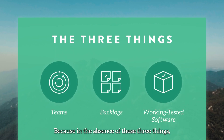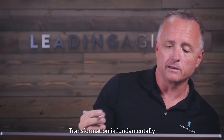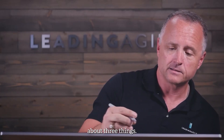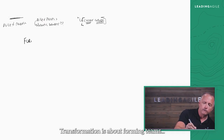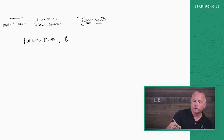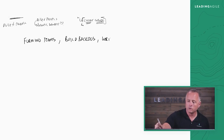Because in the absence of these three things, nothing else in Agile works. Transformation is fundamentally about three things: forming teams, building backlogs, and having the ability to produce working tested software.